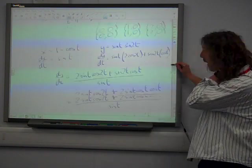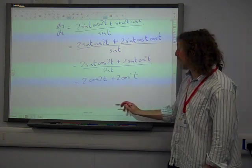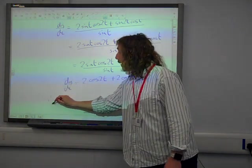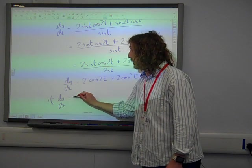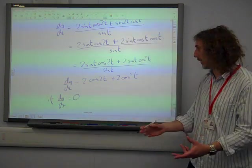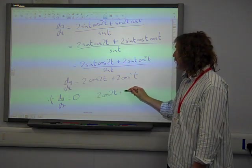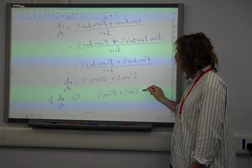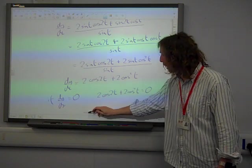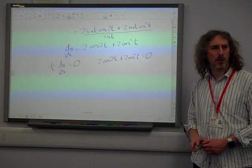And then it said, find any stationary points. The coordinates of any stationary points. So we're left with this now. If we've got the stationary point, that means dy by dx equals zero. And again, you have to actually state that you're dealing with dy by dx being zero. So we've got 2 cos 2t plus 2 cos squared t is zero.